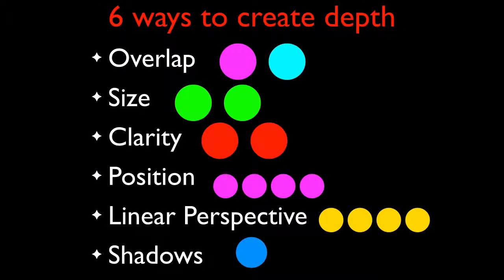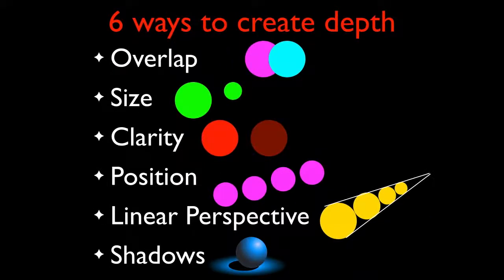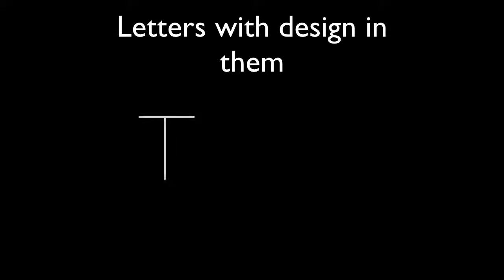So those are our six ways to create depth. I'd like you to do a project showing all six ways: overlap, size, clarity, position, linear perspective, and shadows. One important thing to remember when doing letters in perspective to show depth is that letters cannot be drawn with just single lines. Lines — unless they're really thick — don't really have the ability to show much depth.